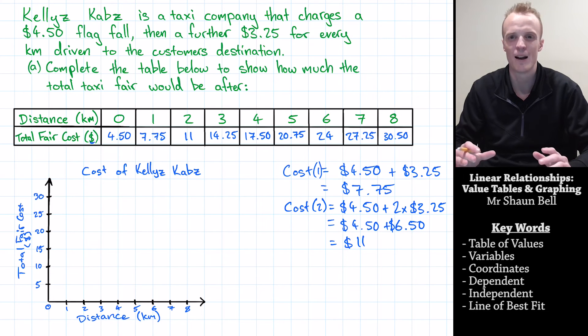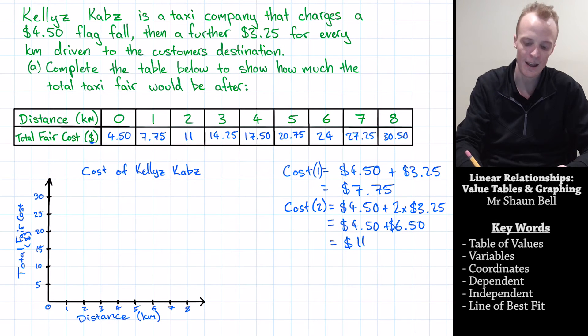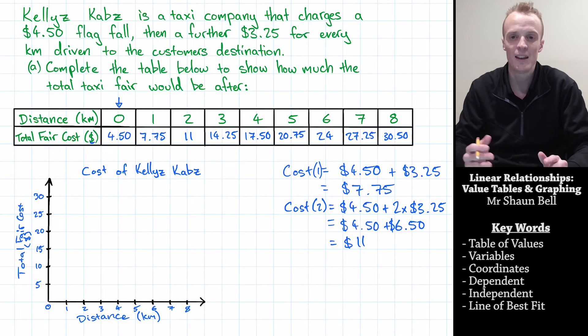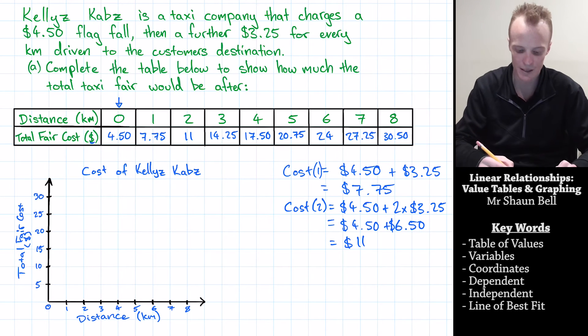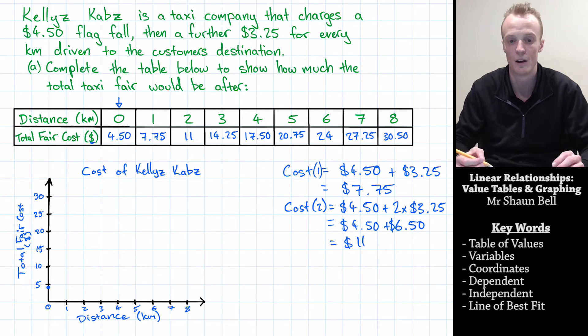And now we've done all that, we're ready to start plotting the points. Now to plot these points, we've actually got to look at each one of these little columns on their own. They give us a set of coordinates. The distance coordinates being our x-coordinate, and the total fare cost being our y-coordinate. So when we're going to plot this, our first plot is going to be at zero kilometres on our distance, or our x-axis, and then we go and find where $4.50 would be on our y-axis, and we put a little dot.